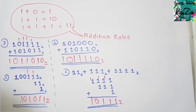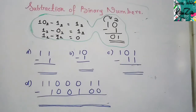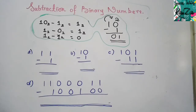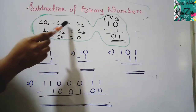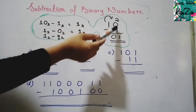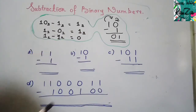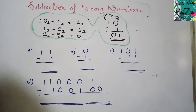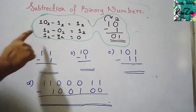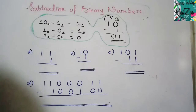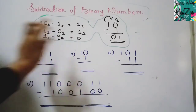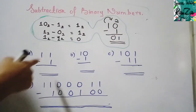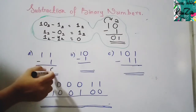Now let's cover subtraction of binary numbers. There are rules to follow: 1−0 = 1 (normal). 1−1 = 0 (normal). 0−1 is not possible directly — you must borrow from the previous column. When you borrow, it becomes 2, so 2−1 = 1. This borrowing rule is the key thing to remember for binary subtraction.